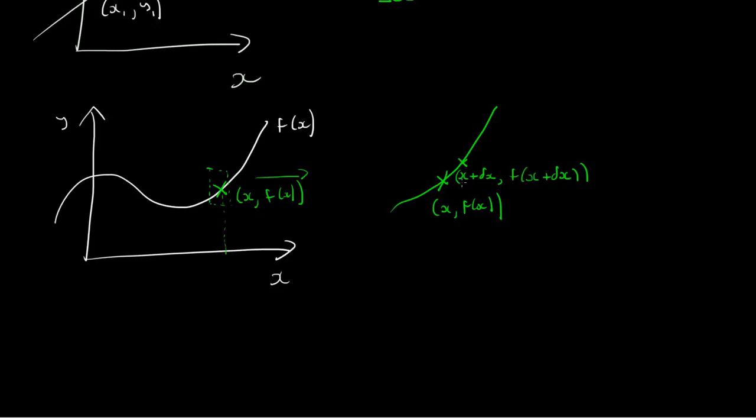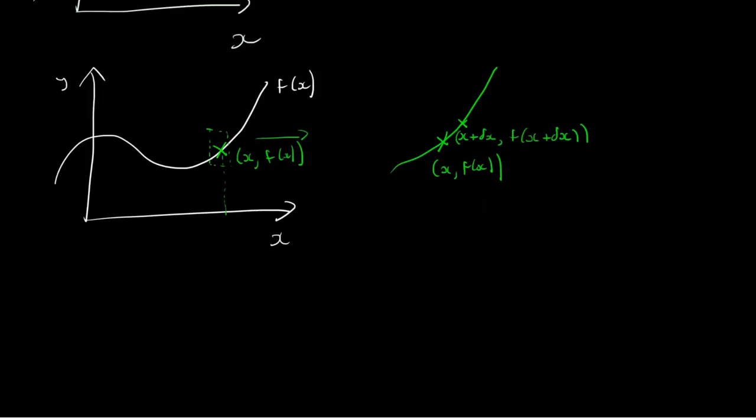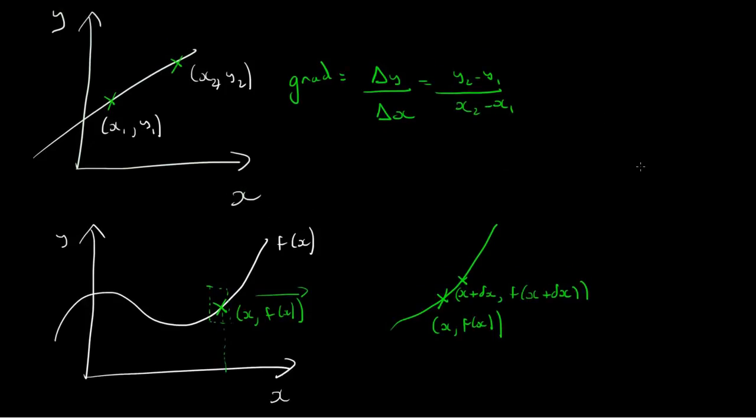This delta x is a number. It's going to be an amount different to this x value. So the gradient value that we're going to calculate from this is going to be close, but not exactly the gradient that we're looking for.